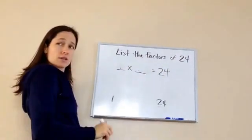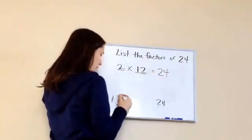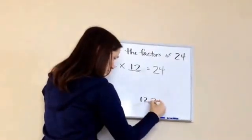There's two and something. Twelve? Yeah, twelve. Take half of the number, very good. Two times twelve. Two, twelve. Good.